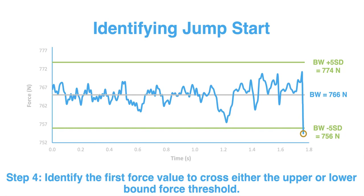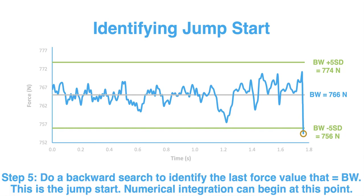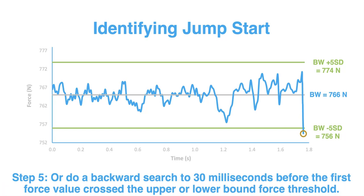Once we scan through, we look for the very first data point in our force-time record — after the athlete has been weighed — at which that upper or lower bound threshold has been surpassed. The assumption when we commence forward dynamics procedures is that the athlete is remaining still and upright on the force plate. Because the threshold has already been surpassed at the point we detect it, the athlete has already commenced movement. So we then perform step five: a backward search to identify the last value that represents body weight — and that is where the jump start has commenced.